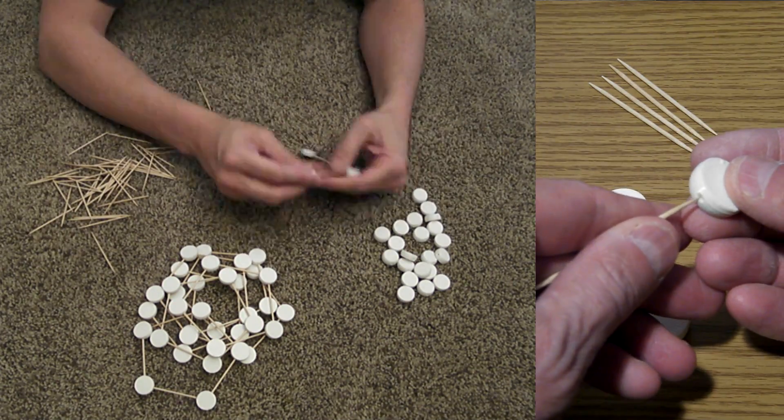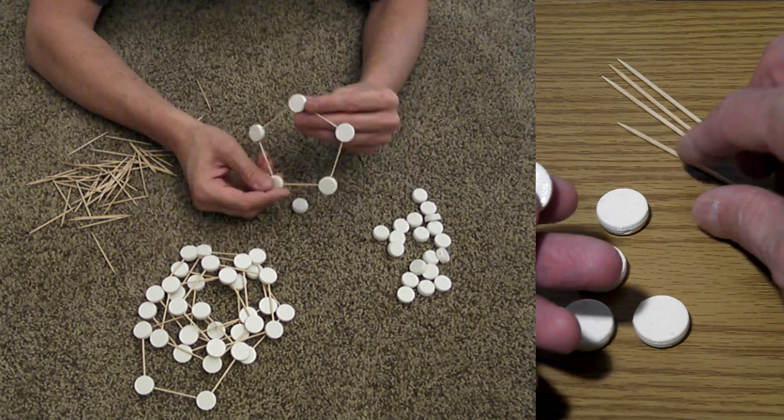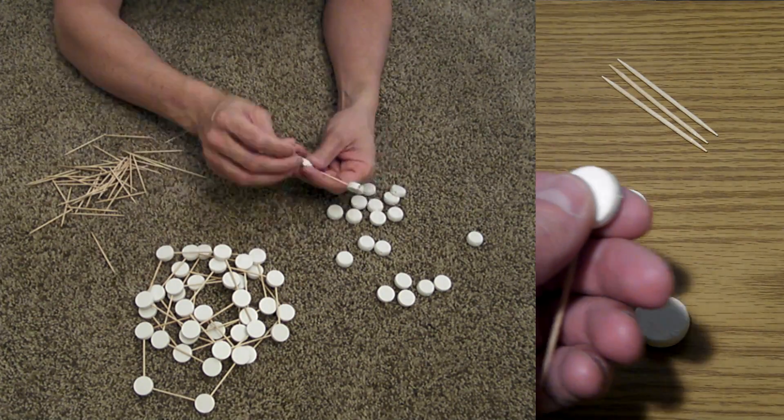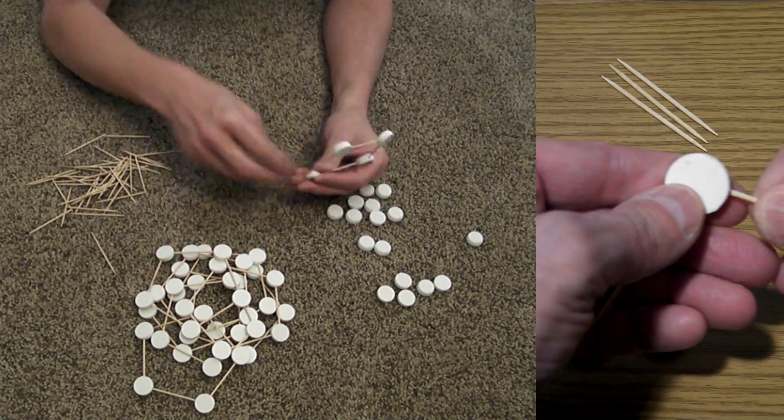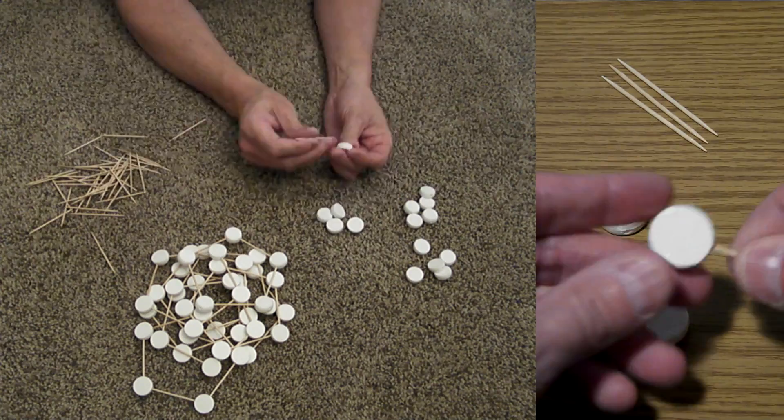When you're making the individual pentagons, you want to use the sides that don't have the dot on them, so the dots will all be facing outwards from the pentagon.